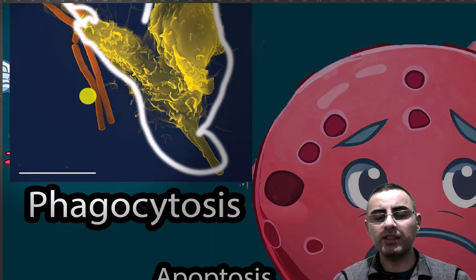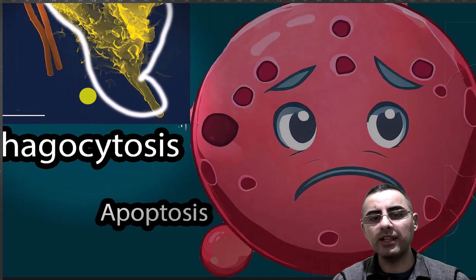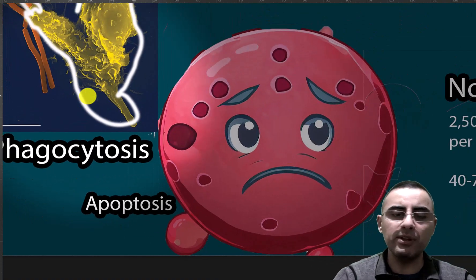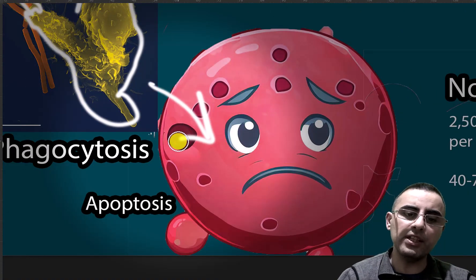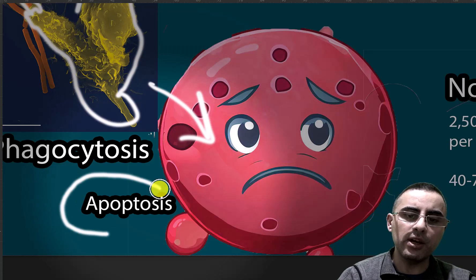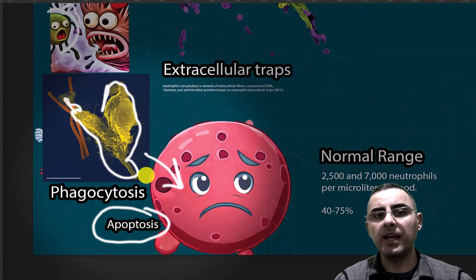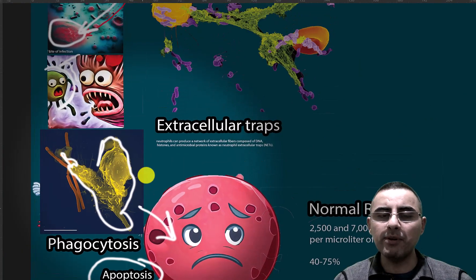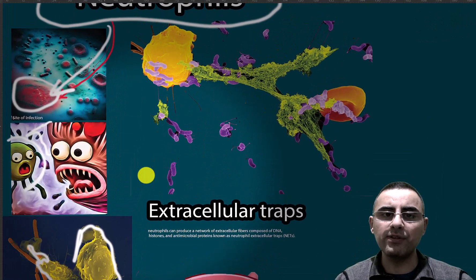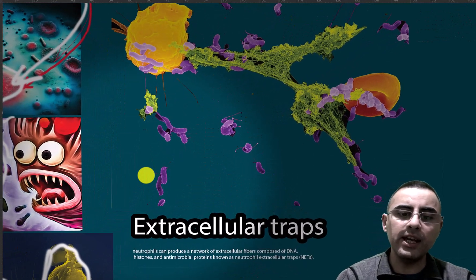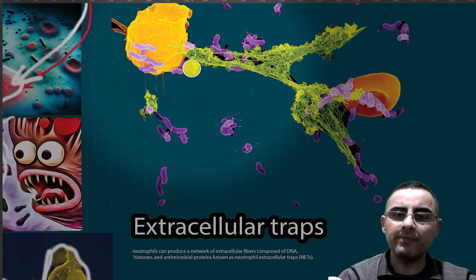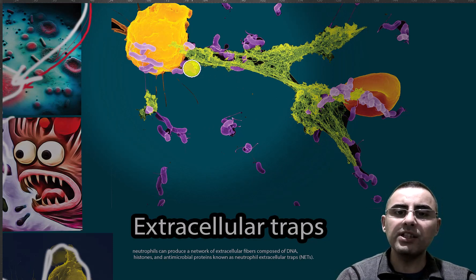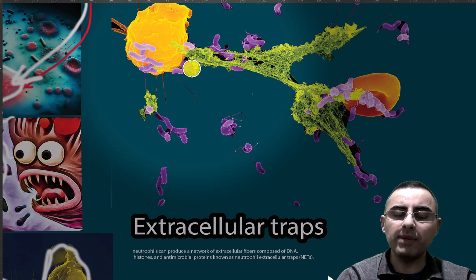This process is called phagocytosis. After phagocytosis, the neutrophil will die — this process is called apoptosis, or programmed cell death. Another important function of neutrophils is to create extracellular traps, which consist of DNA fibers and different antimicrobial proteins.